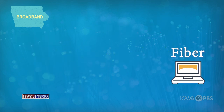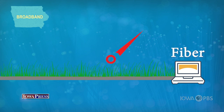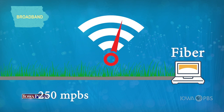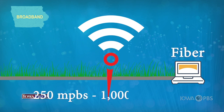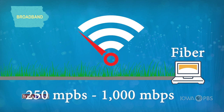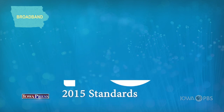Fiber-optic cable is a tight bundle of ultra-thin optical wires buried underground and typically delivers download speeds of 250 megabits per second to 1 gigabit per second.